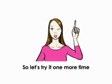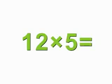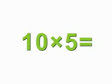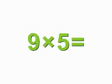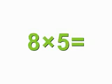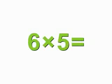So let's try it one more time. 12 times 5 is 60, 11 times 5 is 55, 10 times 5 is 50, 9 times 5 is 45, 8 times 5 is 40, 7 times 5 is 35, 6 times 5 is 30.